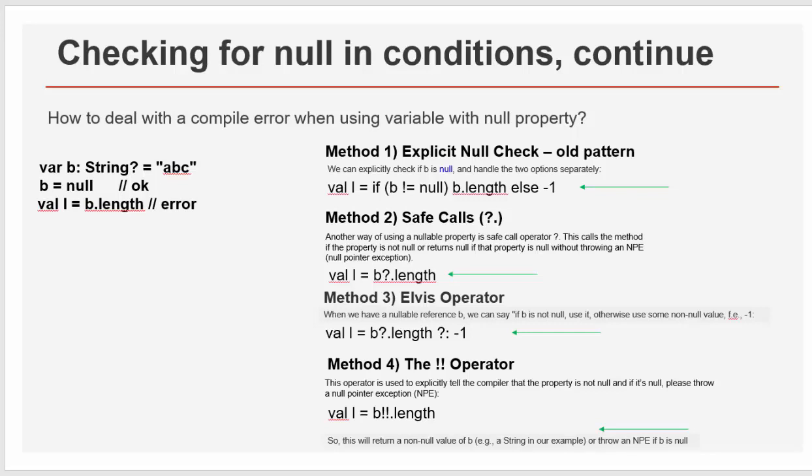Method one has a name explicit null check. This is old pattern needed in Java always like this. We can explicitly check if b is null and handle the two options separately. So this is the Kotlin, not Java line, but you understand it very well. If b not null, do what? b length. Otherwise, return minus one. Makes sense, right? So the method one is traditional.